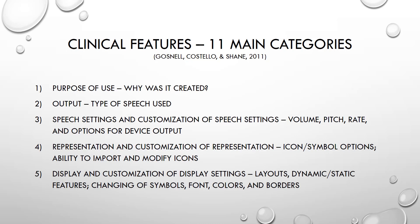Gosnell, Costello, and Shane have developed a systematic way to conduct a feature matching analysis of communication apps. Their analysis includes 11 main categories. The first category is purpose of use — why was the app created? Was it for receptive language, single word expression, or conversation? Another category is the type of output — is it digital speech or synthetic speech, or is there no speech at all? Knowing the output of the app can help to best meet the needs of the user.